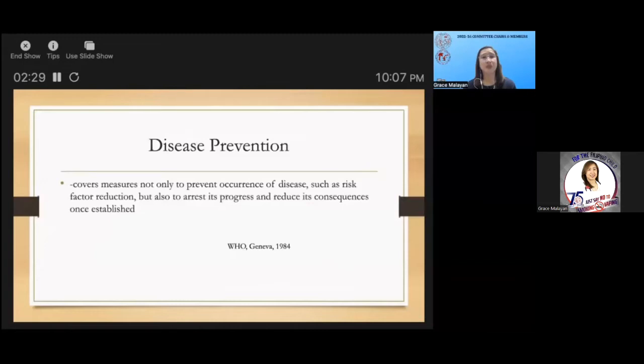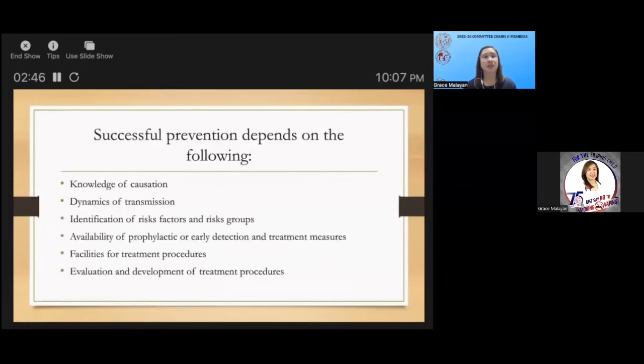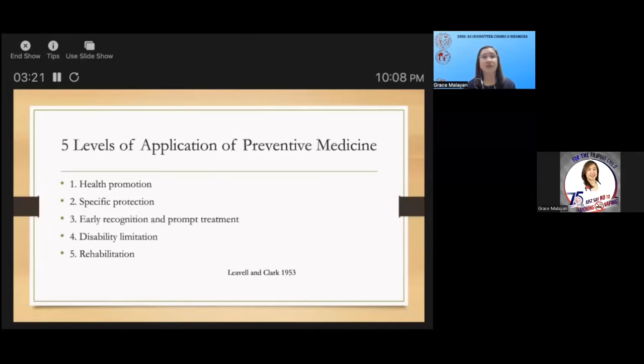Before we begin, I would like to define disease prevention based on WHO. This covers measures not only to prevent occurrence of the disease, such as risk factor reduction, but also to arrest its progress and reduce its consequences once established. Successful prevention depends on knowledge of causation, dynamics of transmission, identification of risk factors, availability of prophylactic or early detection and treatment measures, and evaluation and development of treatment procedures.